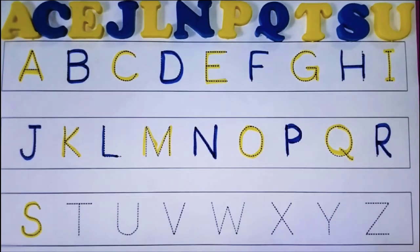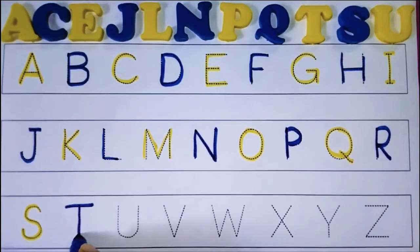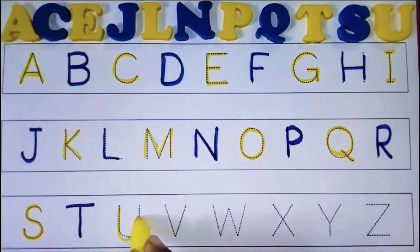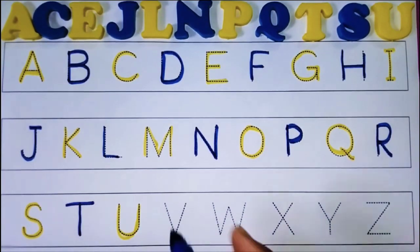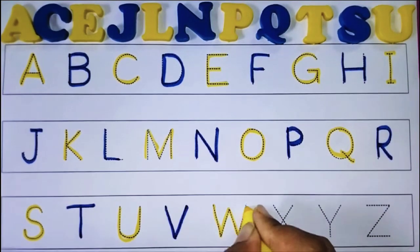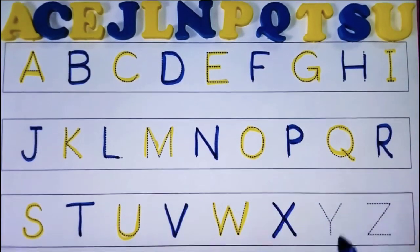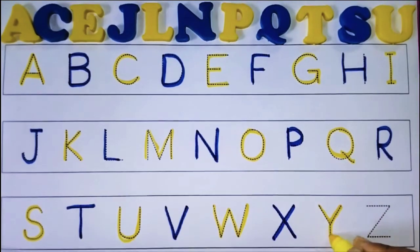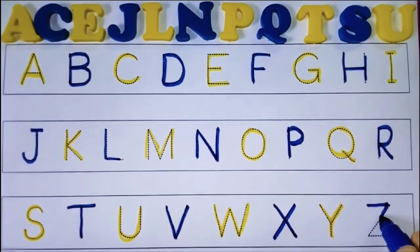S for sun. T for tiger. U for unicorn. V for violin. W for watch. X for x-ray. Y for yak. Z for zoo.